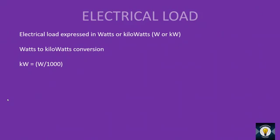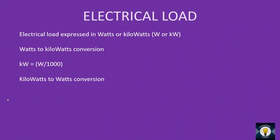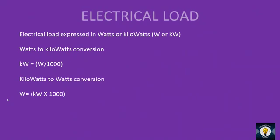If you want to convert watts into kilowatts, just divide it by 1000 — watts divided by 1000 equals kilowatts. If you want to convert kilowatts into watts, multiply it by 1000 — kilowatts into 1000 equals watts.